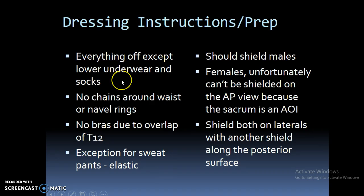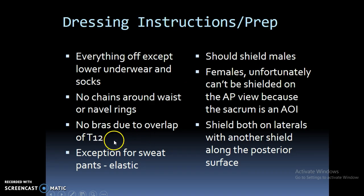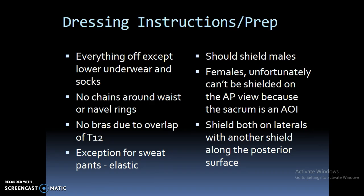For dressing instructions and prep: everything off except lower underwear and socks. We don't want anything around the waist in terms of elastic because elastic is constricting — you'll actually see the pattern right over the lumbar spine. No chains around the waist; navel rings are popular and the navel ring sits right around L4 normally. No bras due to overlap of T12. We'd rather not see underwear at the very top of our AP image either. Exception for sweatpants if the elastic is thin. Shield for males — the male organs are below the level of the symphysis so you can shield on the AP. Females unfortunately can't be shielded on the AP view because the sacrum is in the area of interest.